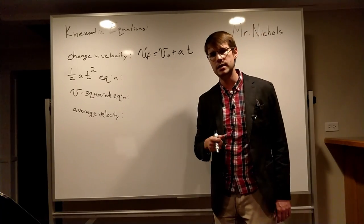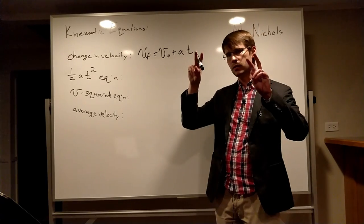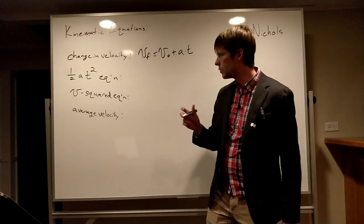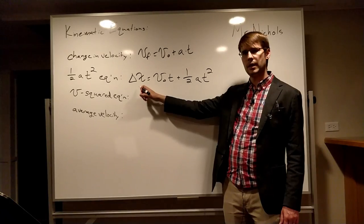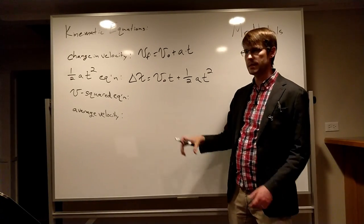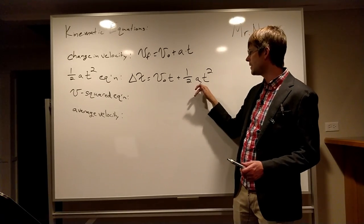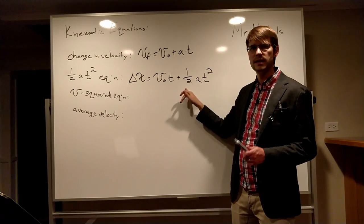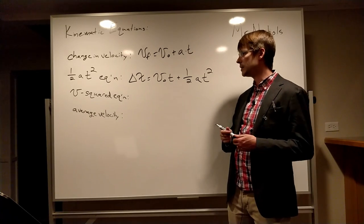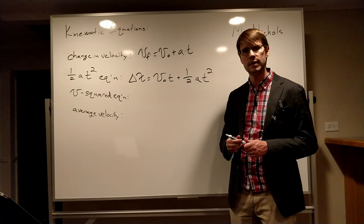Next up is the one half at squared equation. This is one that is used, this is probably the most commonly used one. This is sometimes just called the equation of motion, but I call it the one half at squared equation. Delta x, the change in position, the displacement is equal to the initial speed times the time. That would be how far it would have gone if it wasn't accelerating in that amount of time, plus one half at squared. This is the amount of distance that has changed because of the acceleration. We add those two together, we get the total distance traveled in a certain amount of time.